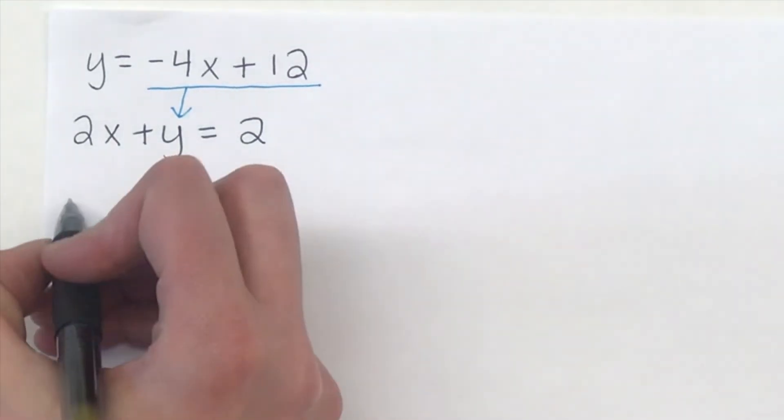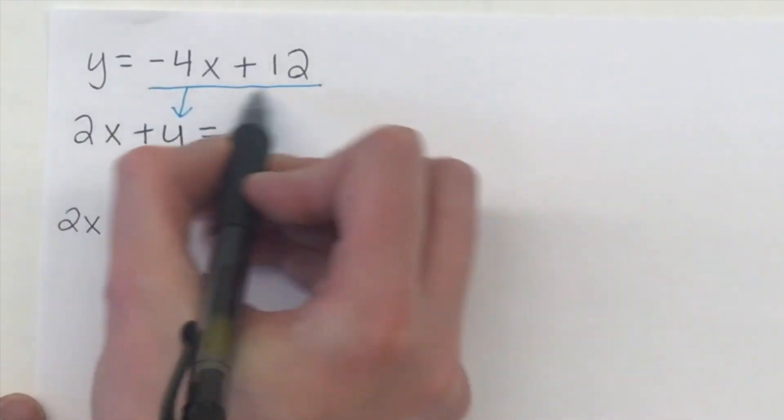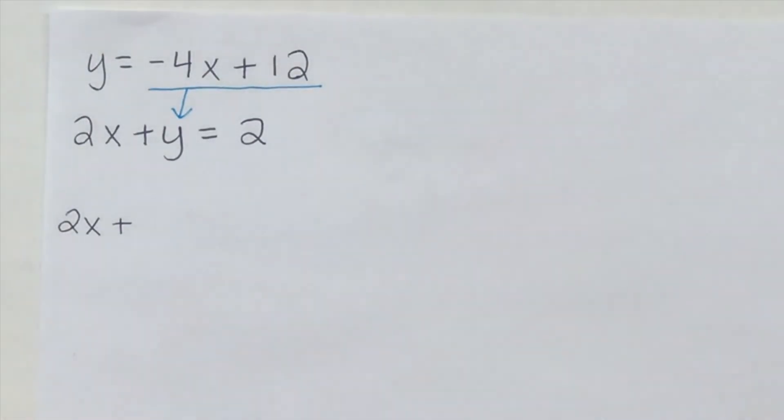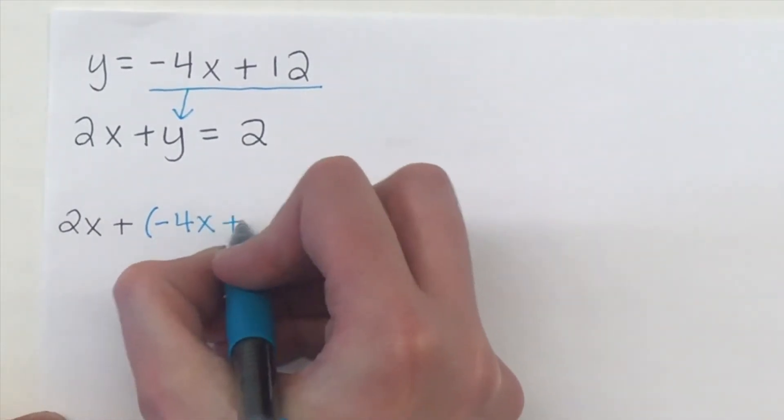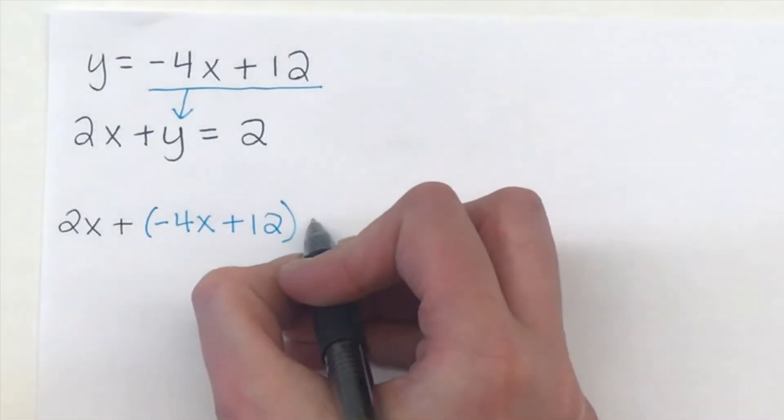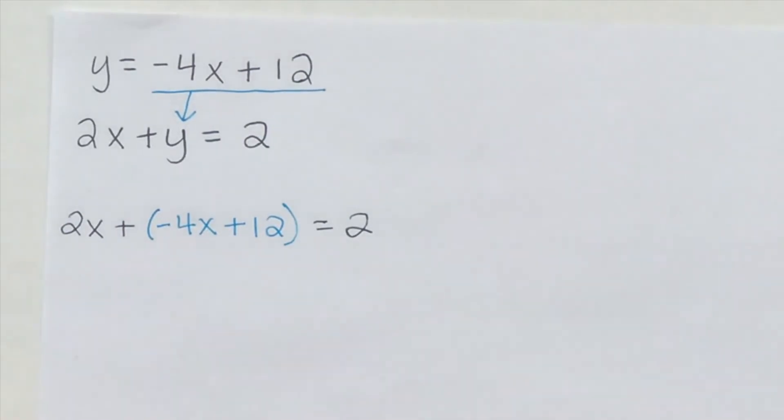So when we go to substitute it in, we're going to have 2x plus, again, this negative 4x plus 12 is going to go in for the y. So we'll have negative 4x plus 12, and then everything else gets copied, equals 2. Now we have an equation and one variable that we can solve.